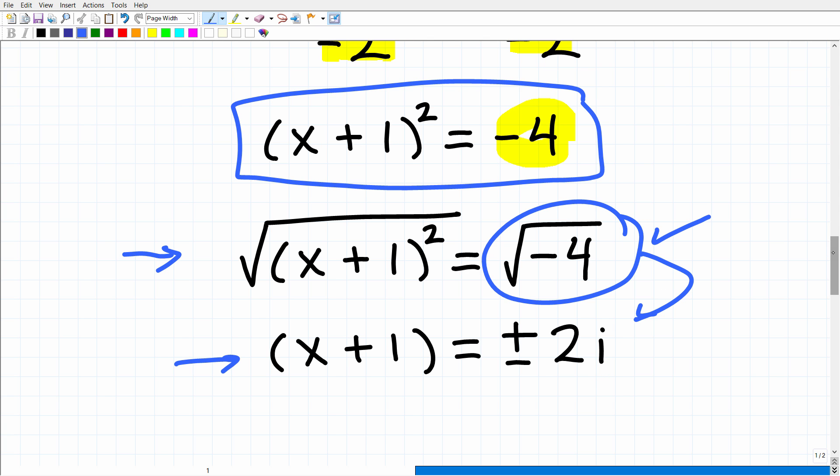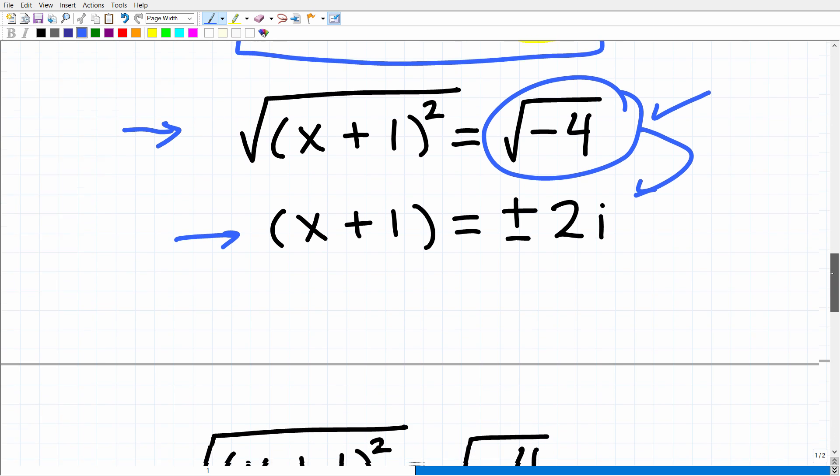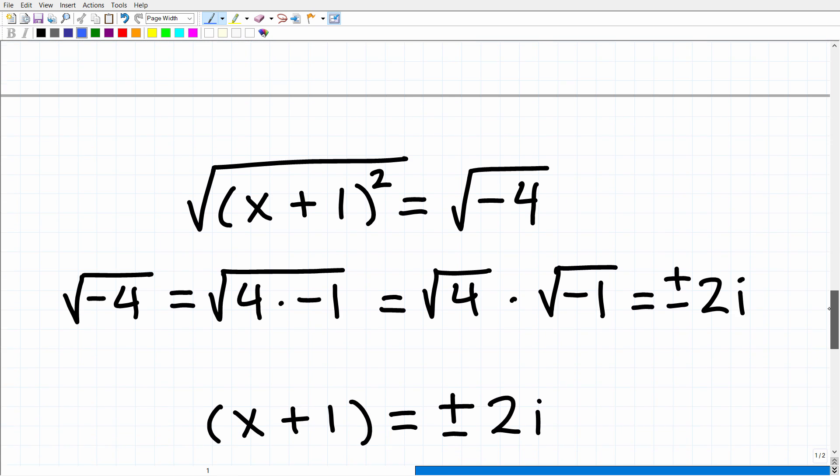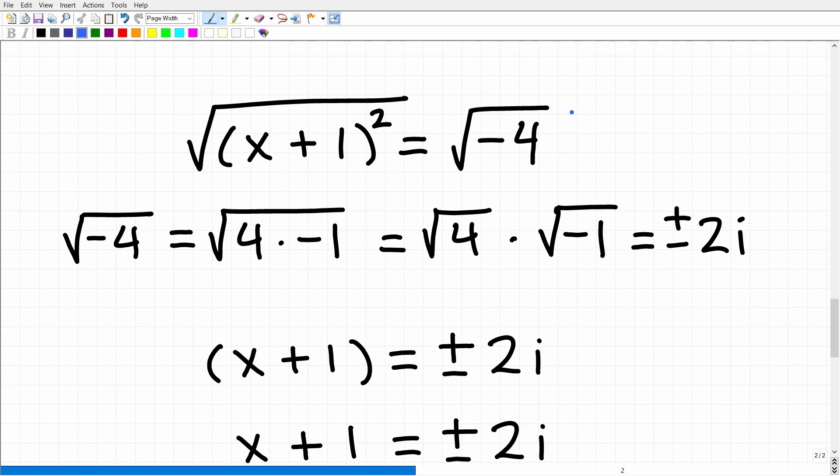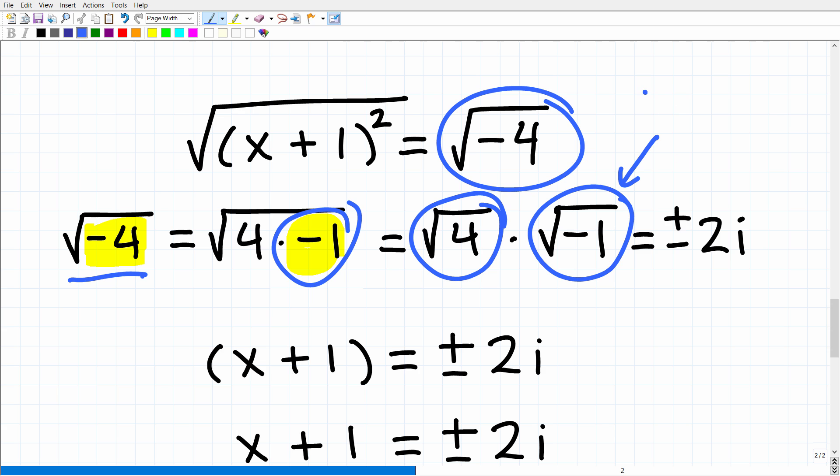Let's quickly review imaginary numbers here for those of you that might need a quick review. At this point, we're going to take the square root of both sides. The square root of negative 4 is what? Well, the square root of negative 4 equals the square root of 4 times negative 1. So this is another principle of square roots and radicals that hopefully you know. The square root of 4 times negative 1 we can write as the square root of 4 times the square root of negative 1. And by definition, the square root of negative 1 is i, our imaginary component.